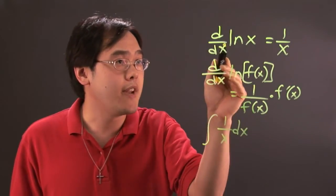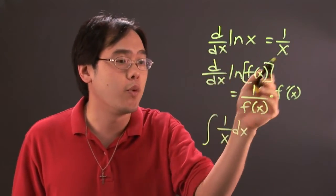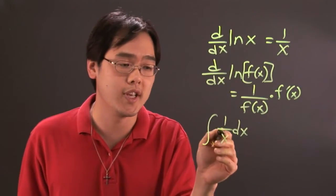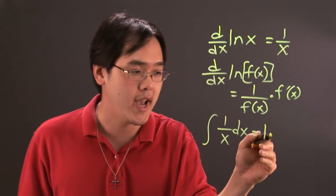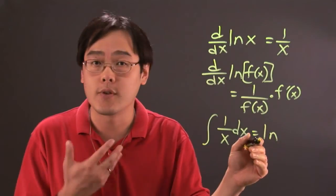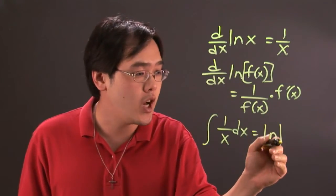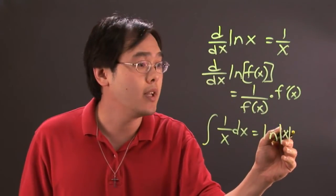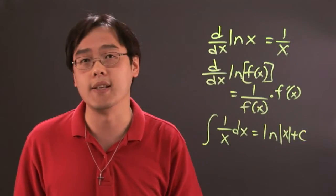Now, if the natural log of x derivative goes to 1 over x, then it only makes sense that the anti-derivative, or the integral of 1 over x, gives you natural log. But for reasons that you'll discover later, it's the natural log of absolute value of x plus the indefinite constant.